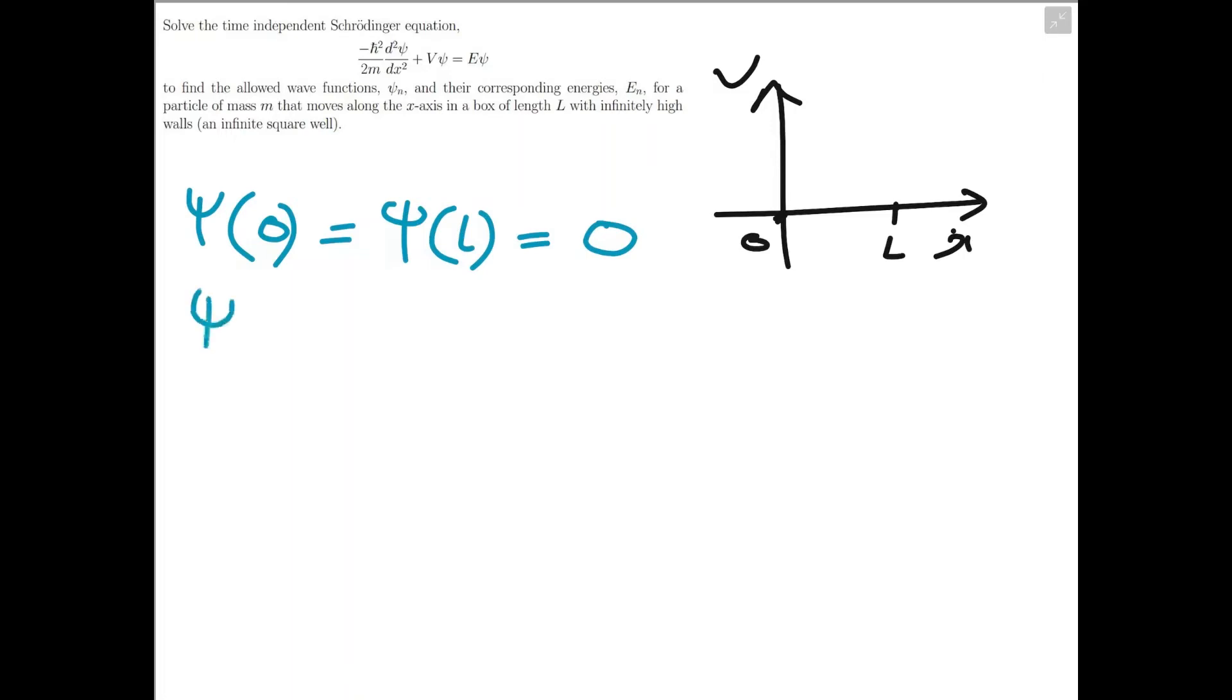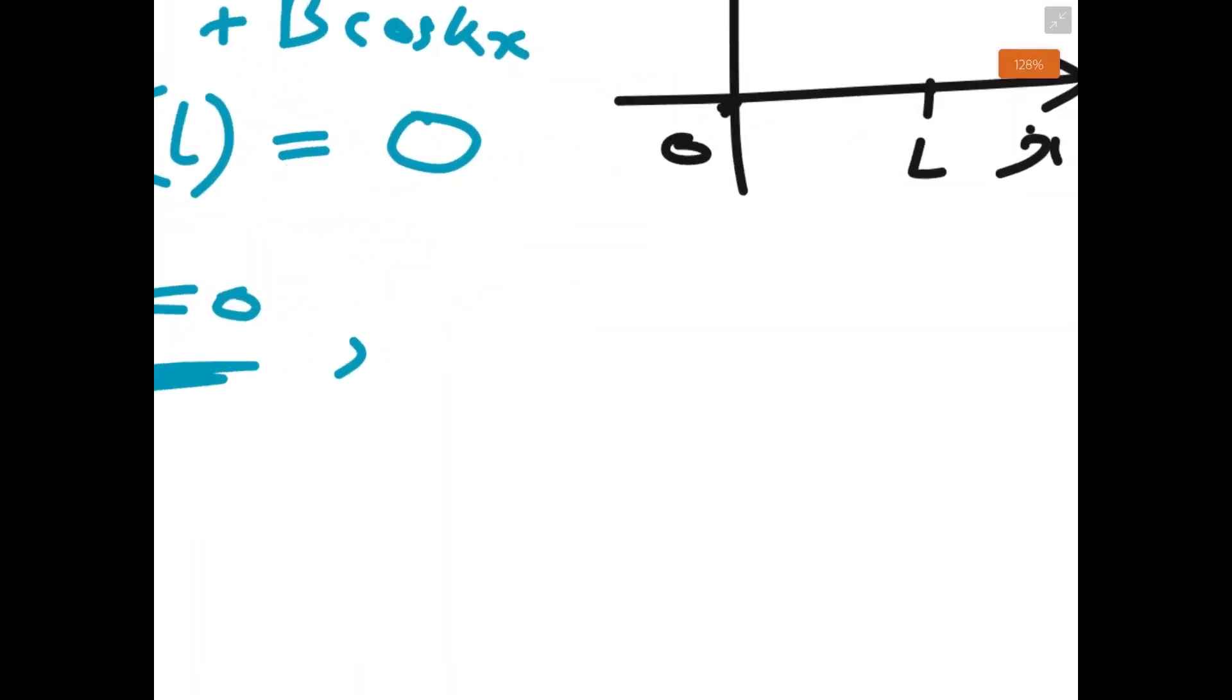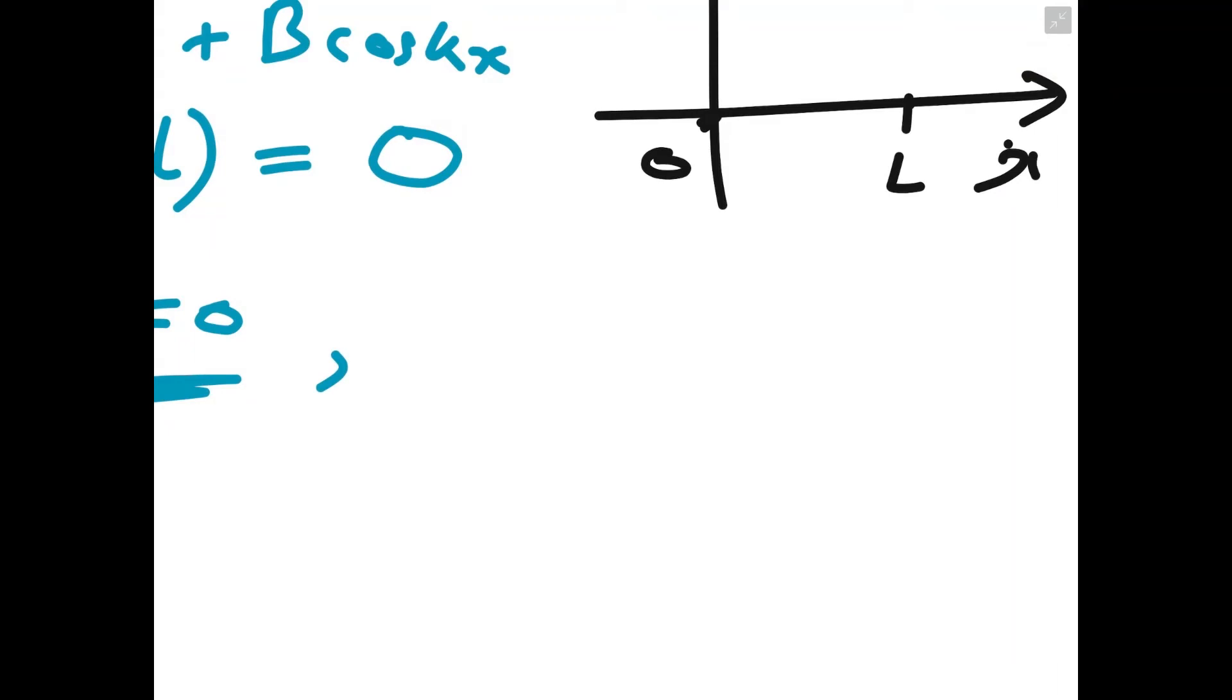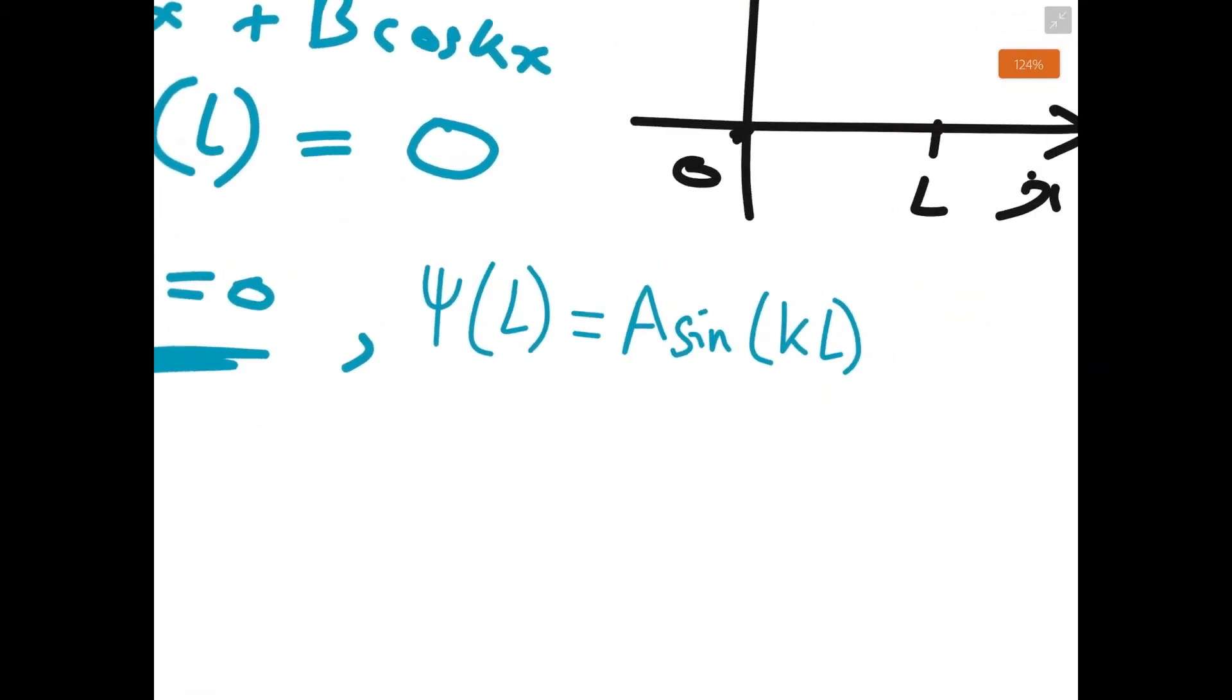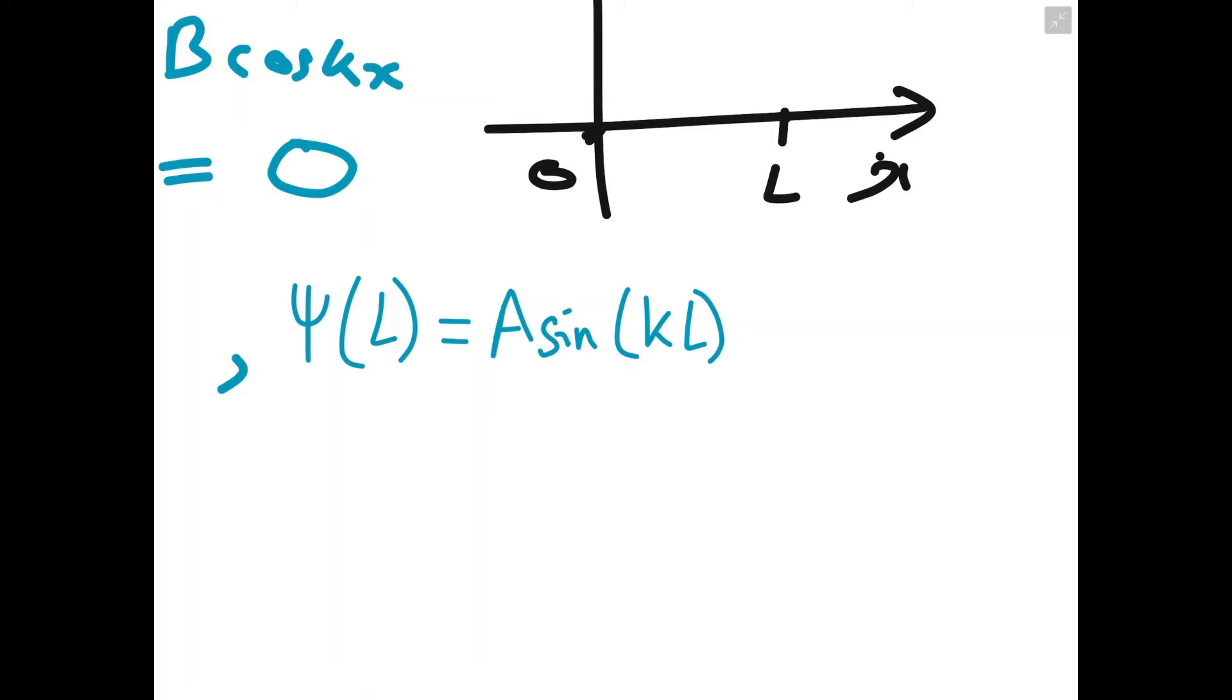So from the first condition, ψ at x equals zero, well remember ψ was just some amount a sin(kx) plus some other amount b cos(kx). If you plug in x equals zero, you get b equals zero. So now we've found what b was. So now we can plug in our second boundary condition that ψ of L, which is equal to a sin(kL), and the cos term disappears now because we found out that b is equal to zero. So sin of kL is equal to zero.